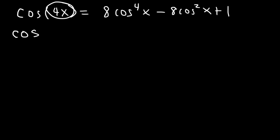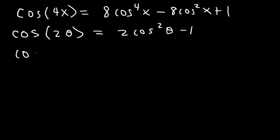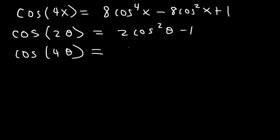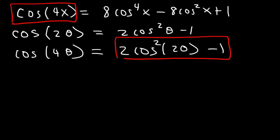Looking at this problem, we need to bring the angle down from 4x to 1x. Use the double angle formula to reduce a large angle to a smaller one. We know cos2θ = 2cos²θ - 1, so cos4θ = 2cos²(2θ) - 1, by doubling θ to 2θ. So replacing cos4x: on the left side we now have 2cos²(2x) - 1.